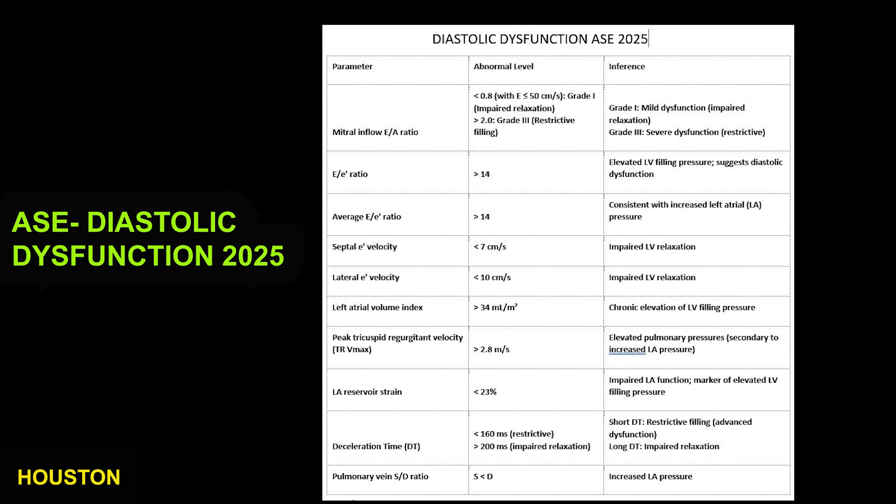Septal E prime velocity greater than 7 centimeters per second indicates impaired relaxation. Lateral E prime velocity less than 10 centimeters per second also indicates impaired relaxation.